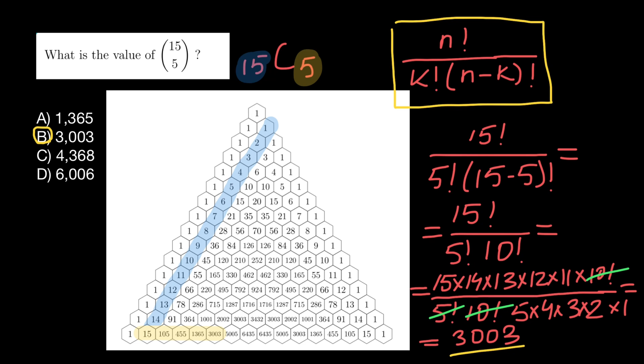And don't forget that this type of notation means N choose K, and this is a combination problem where order of the events doesn't matter.